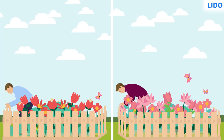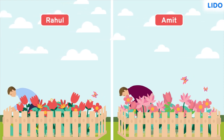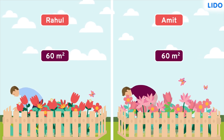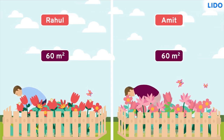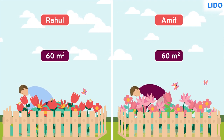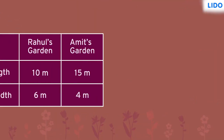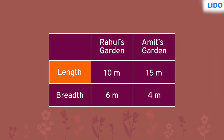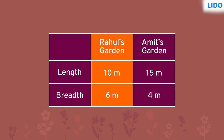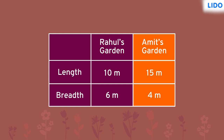Hi there! Meet Rahul and Amit, who are fencing their gardens of area 60 square meters each. Now, despite the gardens' areas being equal, their dimensions are not the same. The length and breadth of Rahul's garden are 10 meters and 6 meters respectively. Amit's garden, on the other hand, is 15 meters long and 4 meters wide.